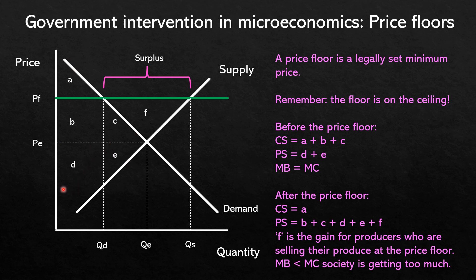Marginal benefit in a free market equals marginal cost, but after the price floor, marginal benefit is less than marginal cost because society is getting too much of the product. After the price floor, consumer surplus is just area A, and producer surplus is now B, C, D, E, plus a new gain which is F — looking at the area above the supply curve and below the price. Therefore there is a gain of area F with a price floor.